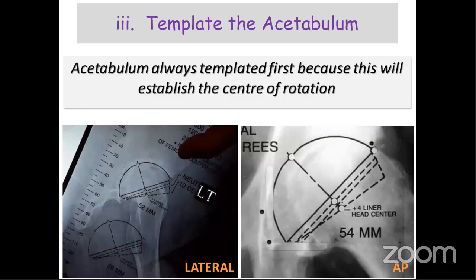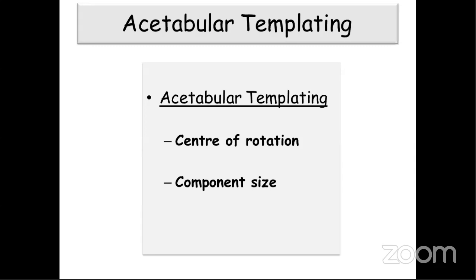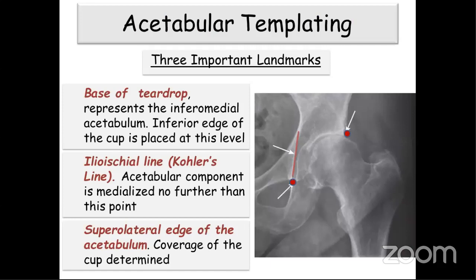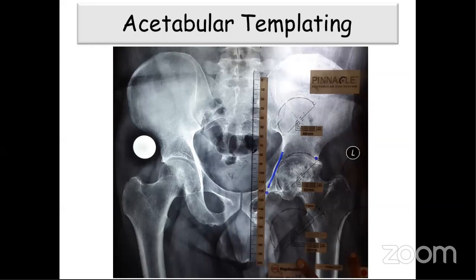Three key acetabular landmarks are the teardrop, the Kohler's line, and the superolateral acetabular rim. The cup should not cross the ileo-ischial line and should not be too lateral. Acetabular templating helps find center of rotation, component size, and position. The abduction angle should be between 40 and 45 degrees from horizontal; vertical cups are associated with loosening and edge wear. For hard-on-hard bearings, aim for closer to 40 degrees. In protrusio acetabuli, avoid over-reaming medially and consider bone graft or cage to fill the defect.